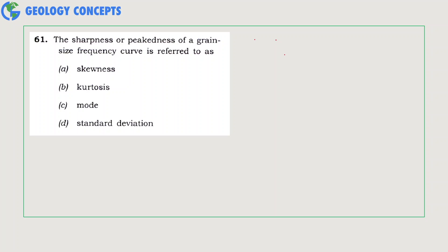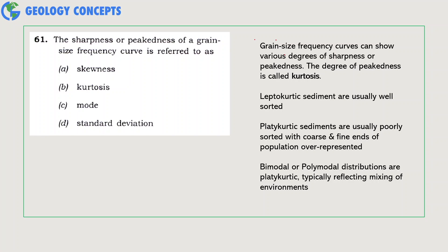The next set of questions are from sedimentary petrology. The sharpness or peakedness of a grain size frequency curve is referred to as skewness, kurtosis, mode, or standard deviation? Grain size frequency curves can show various degrees of sharpness or peakedness. The degree of peakedness is called kurtosis. Hence, option B is the correct answer.